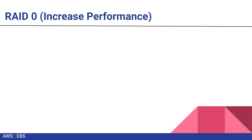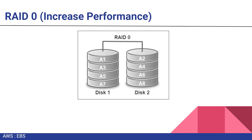RAID has multiple levels. RAID 0 is basically used for increasing performance. RAID 0 works by logically splitting your data and saving it in sequence across two or multiple drives. For example, with disk one and disk two, data is stored in sequence: A1 in disk one, A2 in disk two, then A3 in disk one, A4 in disk two. This is how it splits your data and stores it across multiple storage disks.